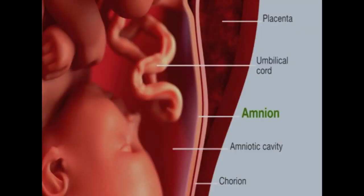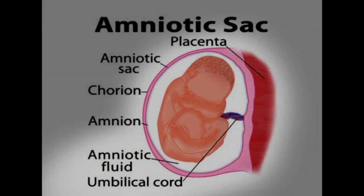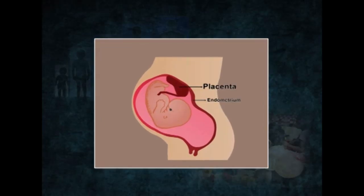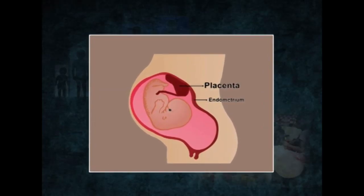The amnion is like a bag or envelope and contains a clear fluid in which the developing embryo floats. The amniotic fluid provides a temperature and humidity controlled, shock-proof environment. The umbilical cord contains two arteries and one vein and connects the baby to the placenta. The placenta consists of a disc-shaped group of tissues in which small blood vessels from the mother and the baby interweave but do not join.